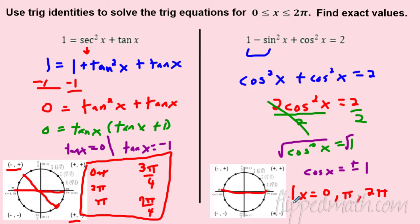So the solutions are x = 0, π, or 2π. That's how we use identities to simplify and solve. For more practice check out the corrective assignment — good luck on the master check!